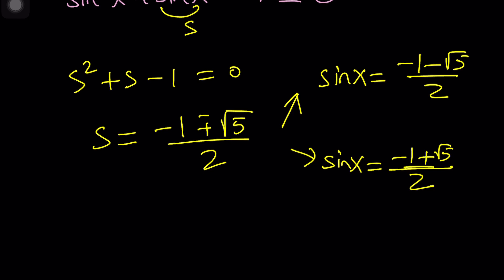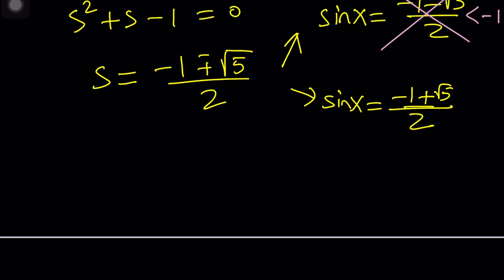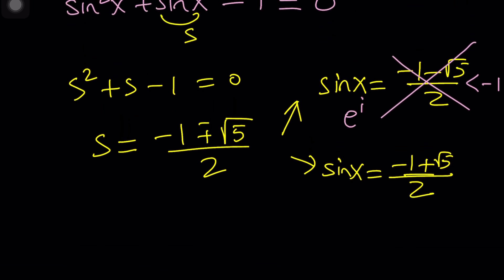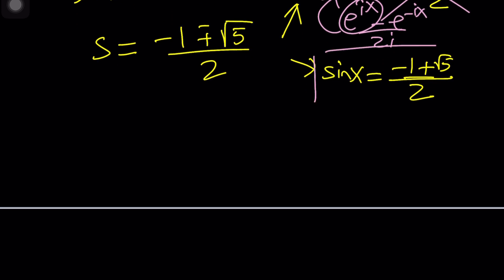Now notice that root 5 is greater than 1. Negative root 5 is less than negative 1. Negative 1 minus a number greater than 1 is going to give you something less than negative 2. In other words this quotient is going to be less than negative 1. Why is that important? Because sine and cosine need to be between negative 1 and 1 inclusive. So Houston we have a problem. I mean we don't have a solution. If you want to go with the complex solutions then I would recommend that you use e to the ix minus e to the negative ix divided by 2i replace sine with that solve for this and use the natural log. But let's proceed with this.